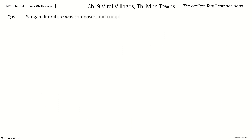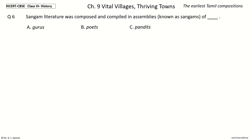Question 6. Sangam literature was composed and compiled in assemblies known as Sangams of blank. The options are: Gurus, Poets, Pandits, Janna. The answer is Poets. Sangam literature was composed and compiled in assemblies known as Sangams — assemblies of Poets.